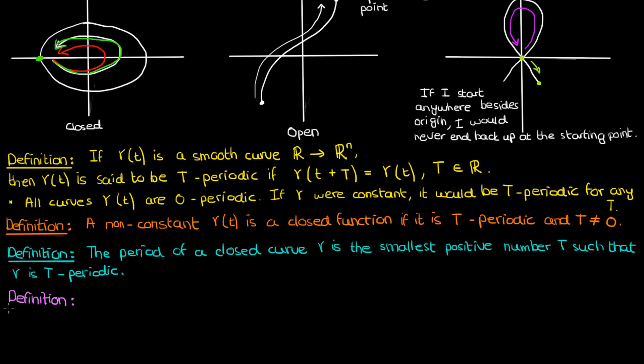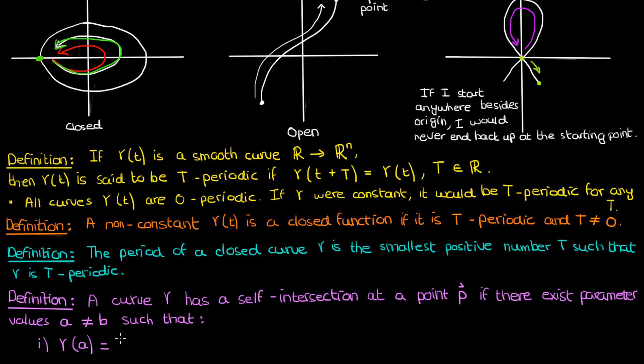The last definition we're going to cover in this video is the definition of self-intersection. A curve gamma has a self-intersection at a point P if there exist parameter values A and B that aren't equal to each other such that two conditions are satisfied. The first condition is that the value of gamma at A and the value at the parameter value B are the same and equal to this point P. Basically this means that gamma is the same at two different parameter values, it intersects itself.